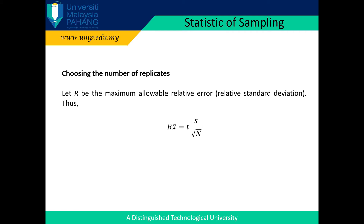In choosing the number of replicates, the equation is derived from the statistical equation for confidence interval, where R is the relative standard deviation, X-bar is the mean, T is the Student's T value, S is the standard deviation, and N is the number of samples, trials, or replicates. The value of N can first be approximated using T for the confidence limit required for an infinite number of samples. At the 95% level, T is equal to 1.96.